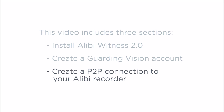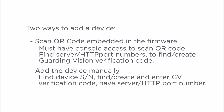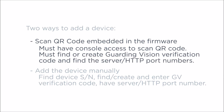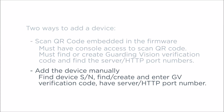Section 3: Create a P2P connection to your Alibi Recorder. There are two ways to add a device to the Alibi Witness app with the Guarding Vision cloud service. By scanning the device's QR code — to use this method, you must have access to the Recorder console to scan the QR code embedded in the device firmware, or you must have an image of it. By adding the device manually — you can log into the Recorder either locally or remotely. In this video, we'll show an example of the manual adding method.